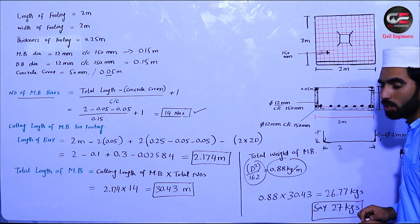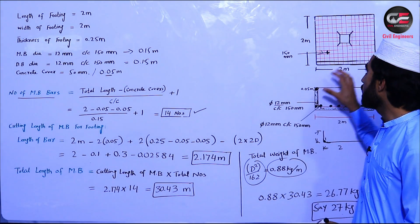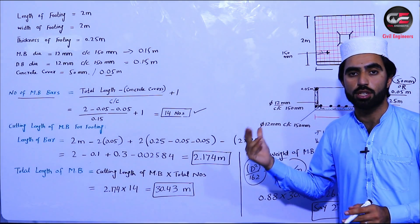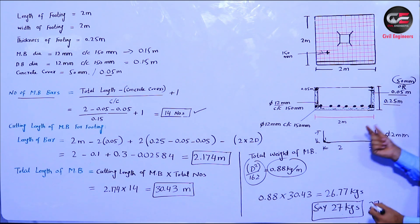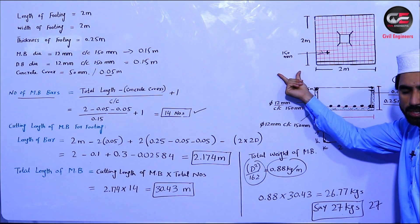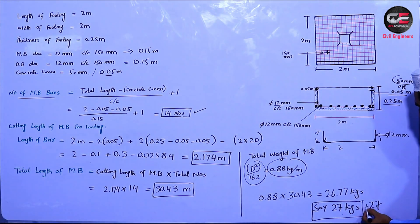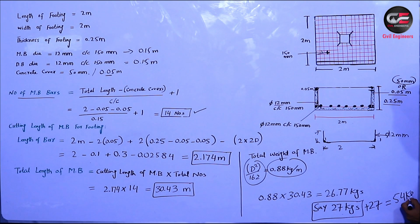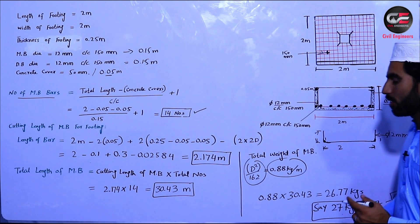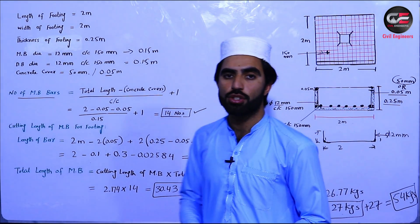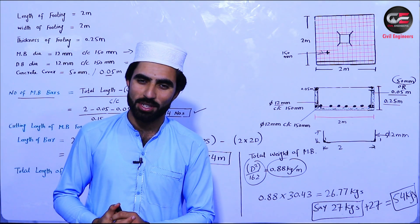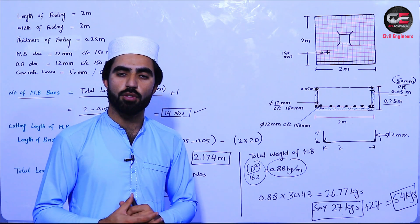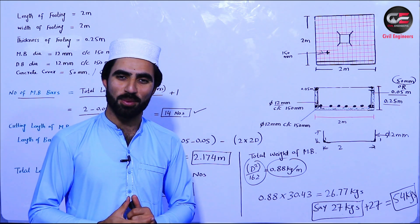Since this is a square footing — not rectangular — the distribution bars are identical to the main bars in diameter, spacing, and length. So we also require 27 kg for distribution bars. Total steel required for this footing = 27 + 27 = 54 kg. This is the formula by which you can find total steel quantity for an RCC footing. If you have any questions, comment below. Don't forget to like the video — thanks for watching!